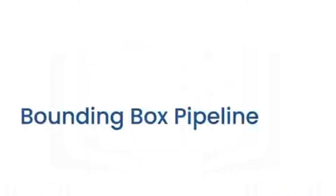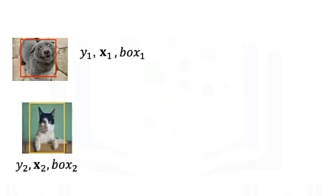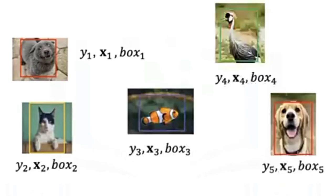The bounding box pipeline. Like classification, we have the class Y and X. We also have the bounding box. Just like classification, we have a data set of classes and their bounding boxes.